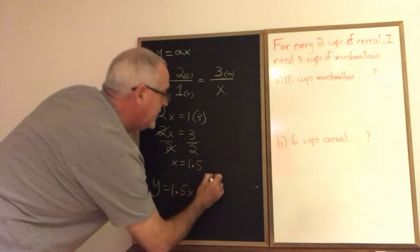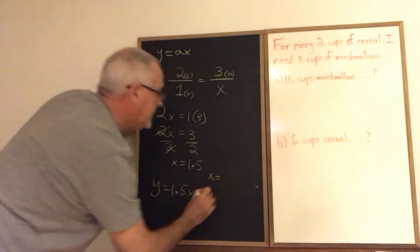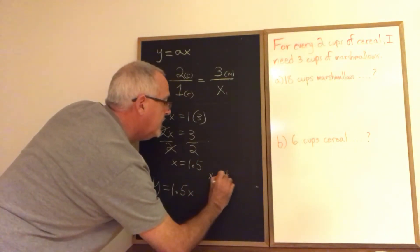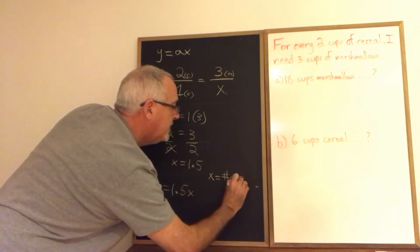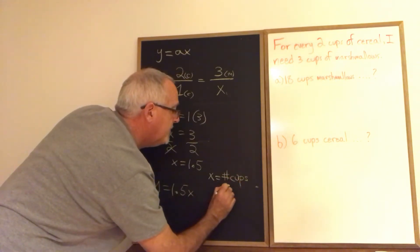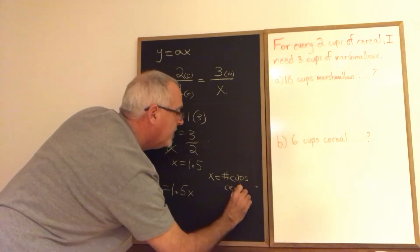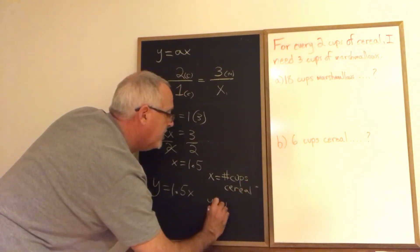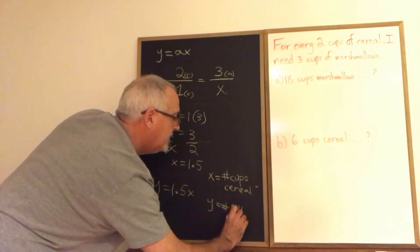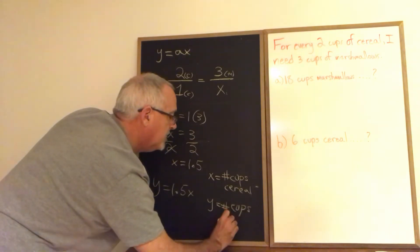So I'm going to say X equals the number of cups of cereal and Y equals the number of cups of marshmallows.